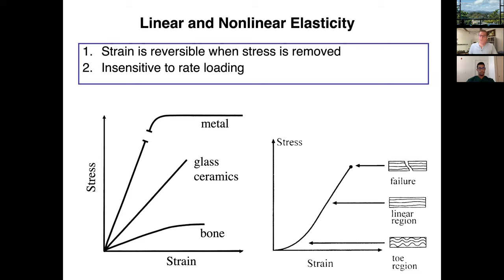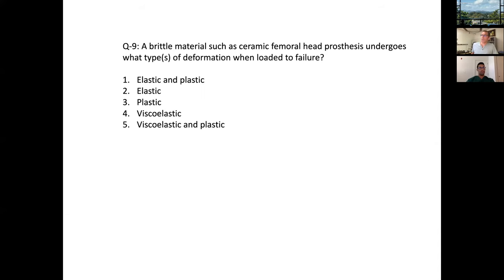So, with that knowledge — a brittle material such as a ceramic femoral head, what types of deformation when loaded to failure? The correct answer — Ajay, do you want to weigh in? I guess it wouldn't be plastic then, so it would just be elastic. Exactly. That's a little tricky because we tend to think of plastic deformation as the thing that's detrimental, but in a brittle material they don't even get to that point. Elastic behavior involves very small strains, so brittle materials cannot withstand large strains the way bone or metals can.